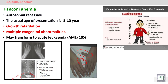Here you can see the kidney and the pelvis. Fanconi anemia is not stable — aplastic anemia may transfer into acute leukemia, AML, as we mentioned before.